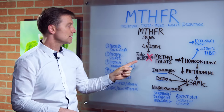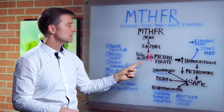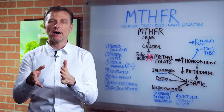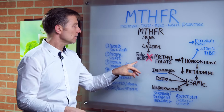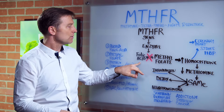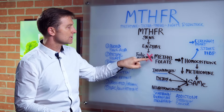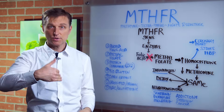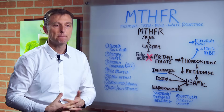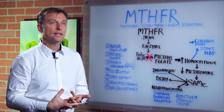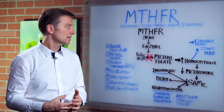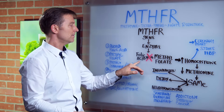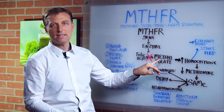The function of the enzyme normally is to convert folic acid into its active form. Folic acid is vitamin B9. Folic acid is the inactive version. It's supposed to normally convert through this enzyme to the active form called methylfolate. And it has a whole series of actions that occur after that. So basically, this condition is a defect that blocks full capacity of conversion of the inactive to the active form of B9.